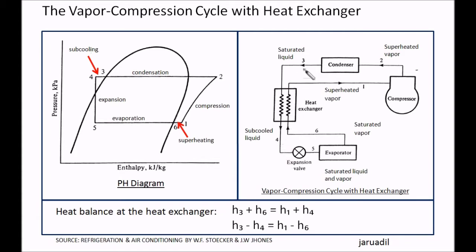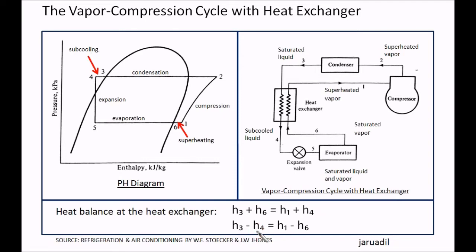The incoming enthalpies are H3 and H6 — add them together. The outgoing enthalpies from the heat exchanger are H1 and H4. We do not multiply by mass because the mass cancels out. So we have: H3 minus H4 is equal to H1 minus H6, by manipulating this equation.